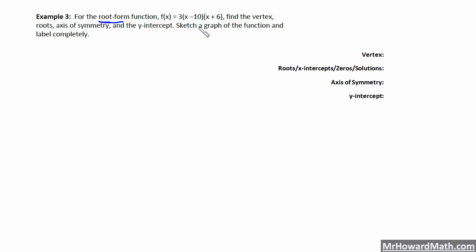The root form gives us the roots directly, and remember the roots are opposite of these signs. So instead of negative 10, we have a root at positive 10. And the other root is opposite of positive six, so that's at negative six. So we have our two roots.